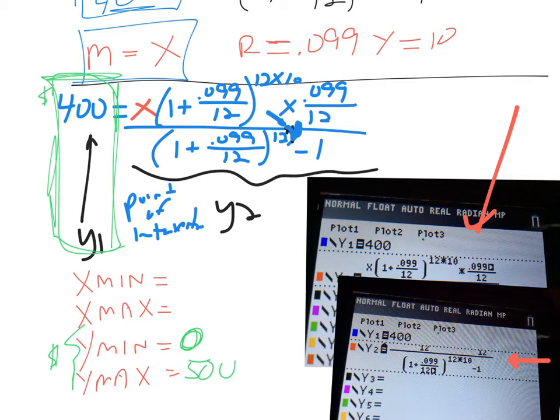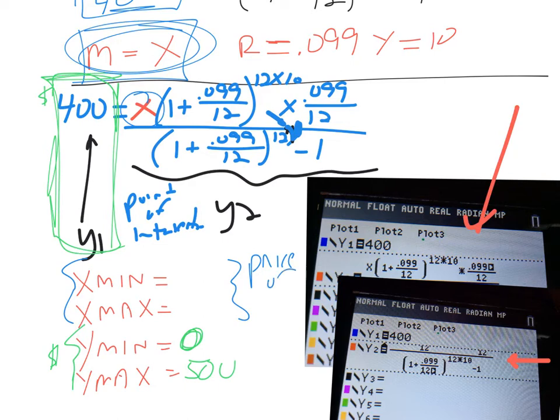For my Xs, what does X represent? Well, X represents how much money I'm trying to mortgage. X represents the price of the motorcycle. Now I have no idea how much motorcycles cost. They're not my thing. But I want to try to figure out how expensive of a motorcycle I can buy. So as far as Xmin, I know motorcycles can't be negative in value, so my Xmin is going to be 0. Xmax, again, I have no idea.